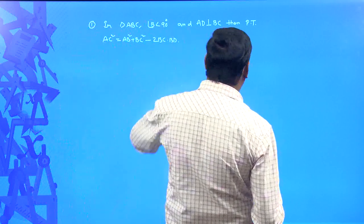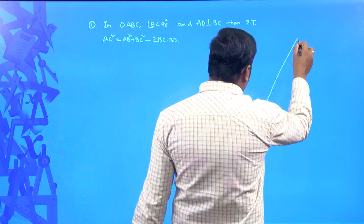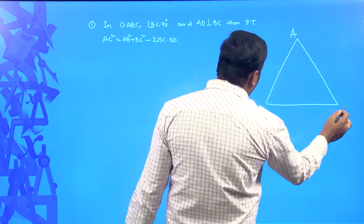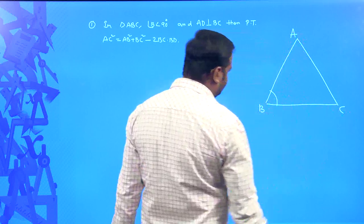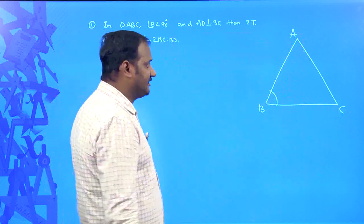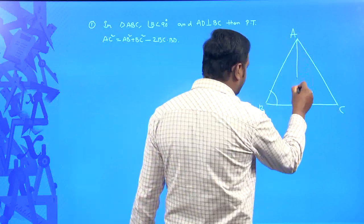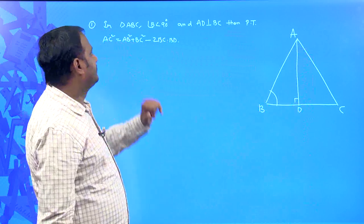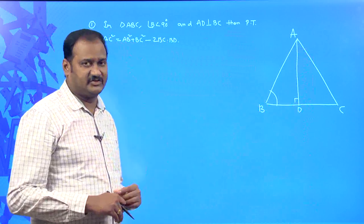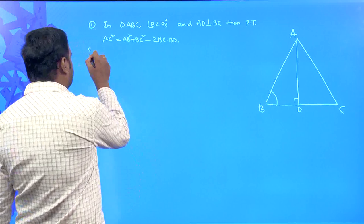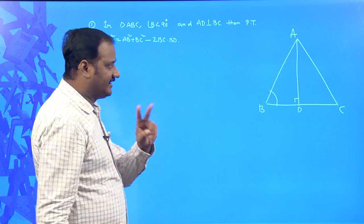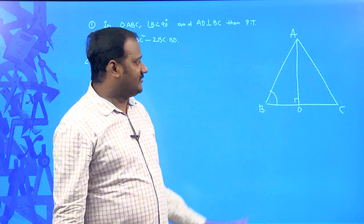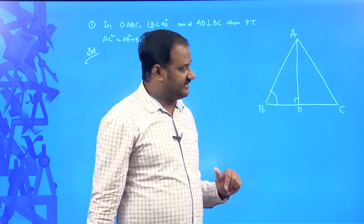Let us draw triangle ABC in which angle B is less than 90 degrees, meaning it is an acute angle triangle. AD is drawn perpendicular to BC. In order to prove this statement, there are two right angle triangles: triangle ABD and triangle ACD. Since both are right angle triangles, we can apply Pythagoras theorem to both.